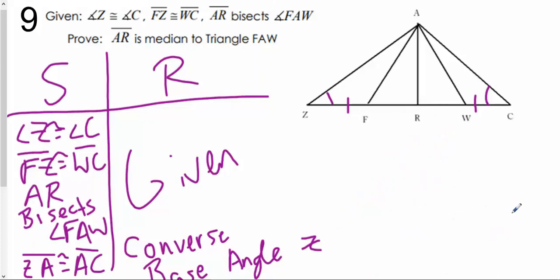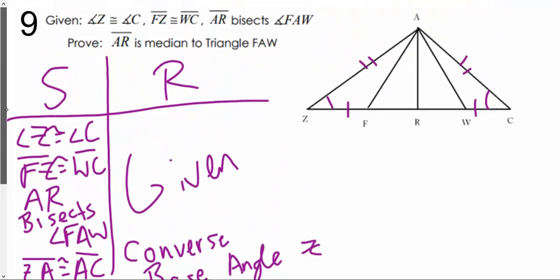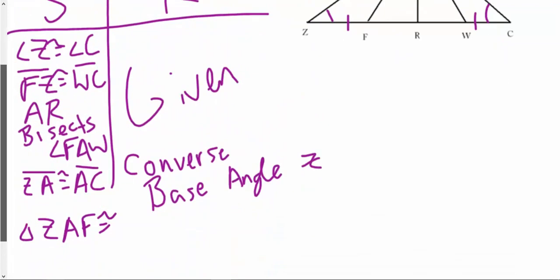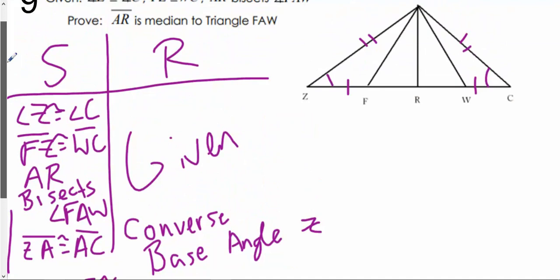So from there, that tells us that these segments are congruent. So now I can say that triangle ZAF has to be congruent to triangle CAW via SAS. So now I know that those two triangles are congruent, which means I'm able to start talking about their corresponding parts.